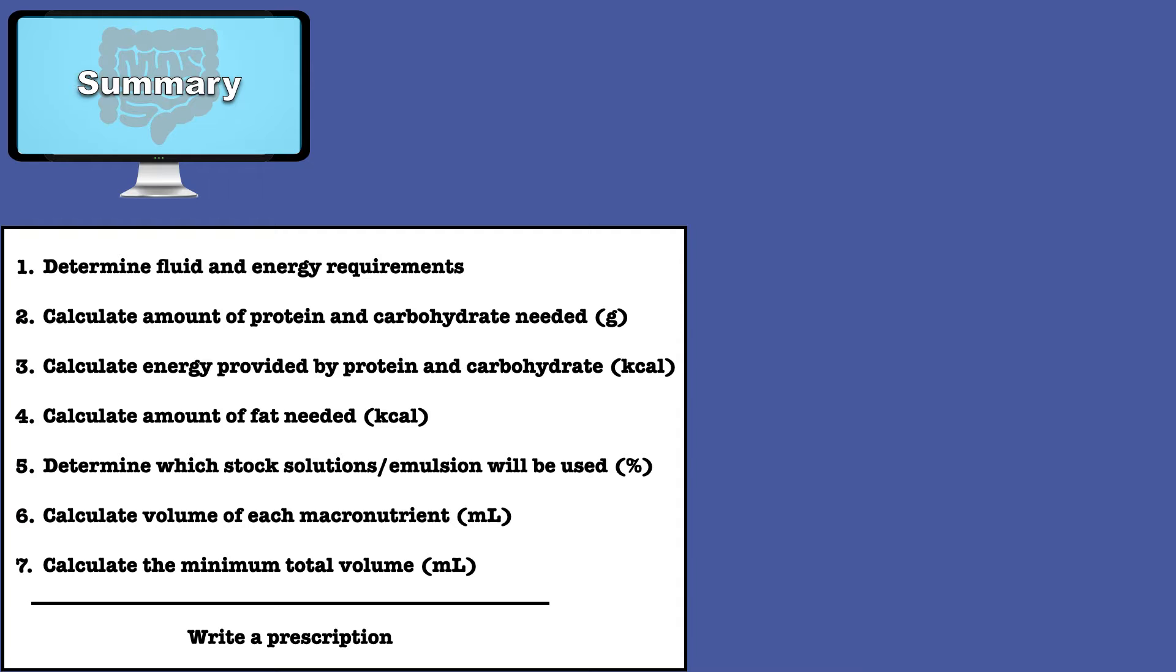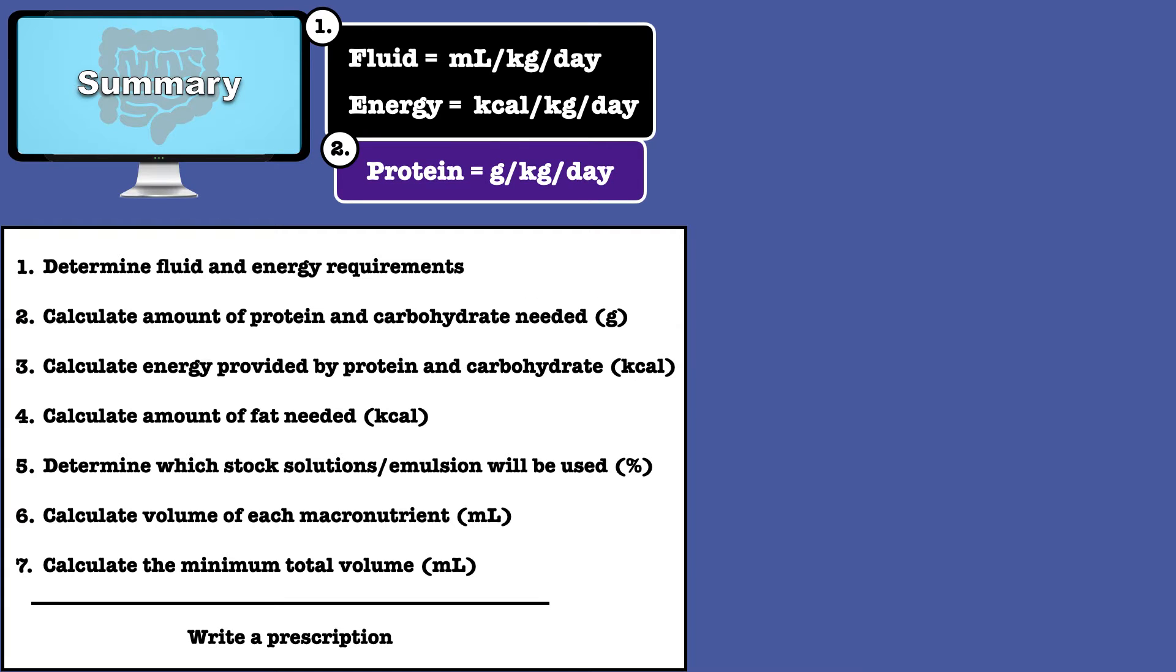The easiest way to determine the demand for fluid, energy, and protein is to use a simple weight-based calculation. For fluid and energy, you should use milliliters per kilogram per day and calories per kilogram per day, respectively.